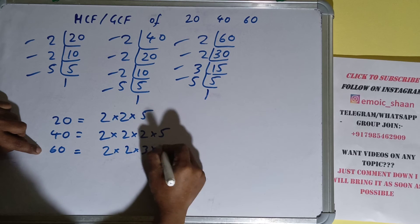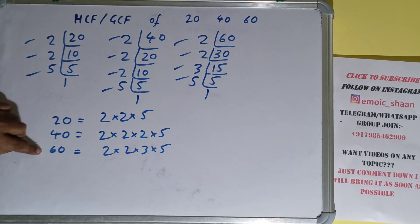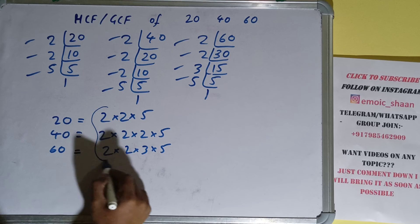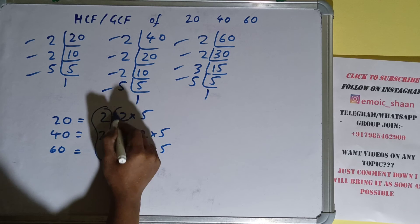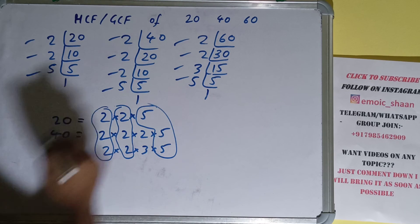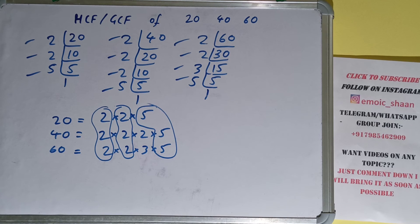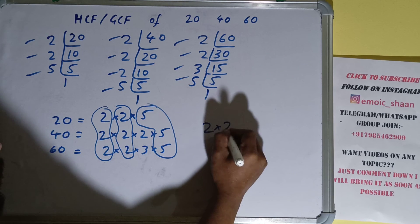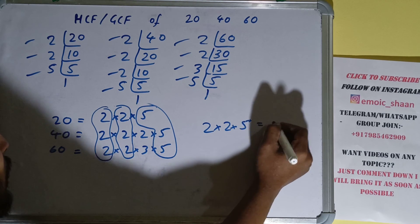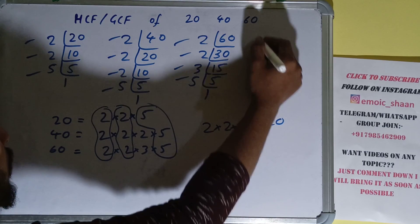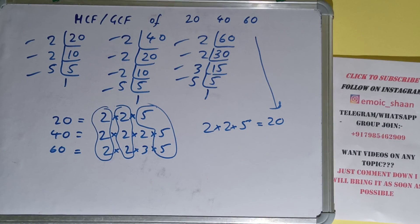Next, we circle out the common prime factors. We have a 2 in common, another 2 in common, and a 5 in common. We don't have anything extra in common. So the answer will be 2 × 2 × 5, which equals 20.